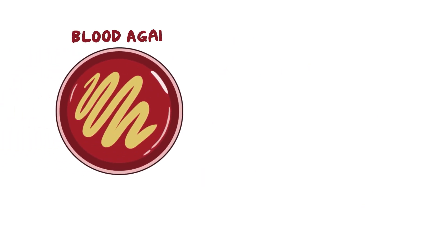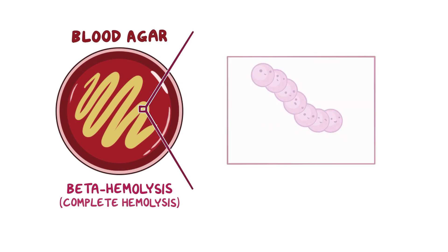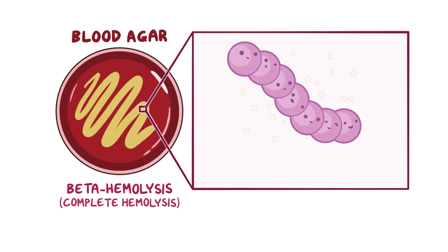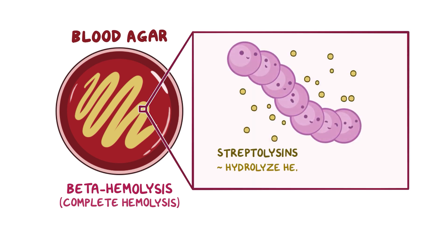When cultivated on a medium called blood agar, strep pyogenes colonies cause beta-hemolysis, also called complete hemolysis. That's because strep pyogenes makes toxins known as streptolysins, which hydrolyze the hemoglobin in red blood cells to transparent, yellow-colored byproducts.